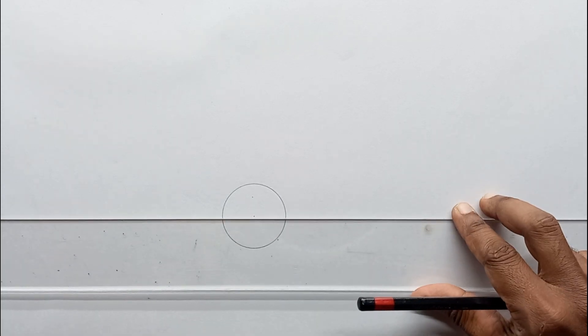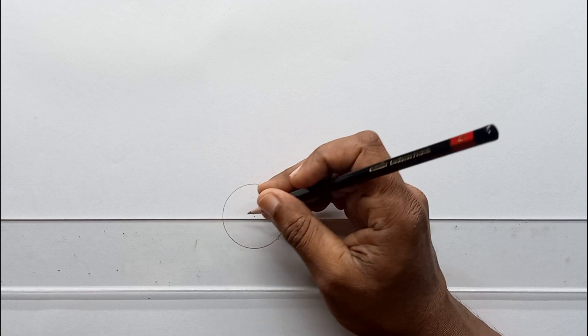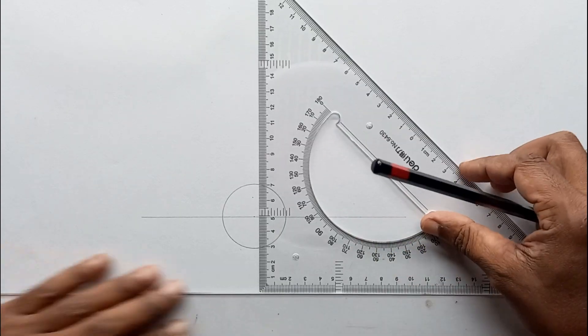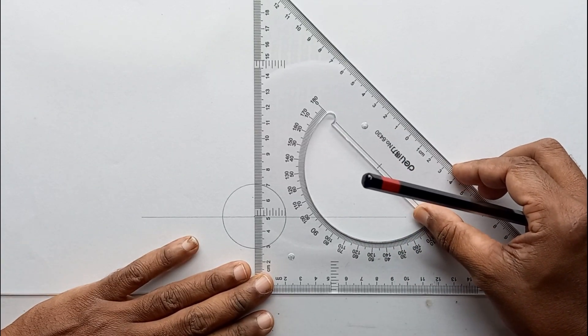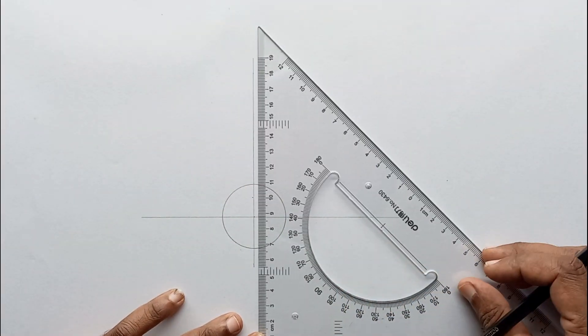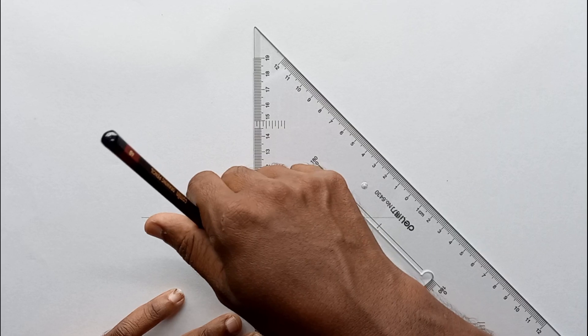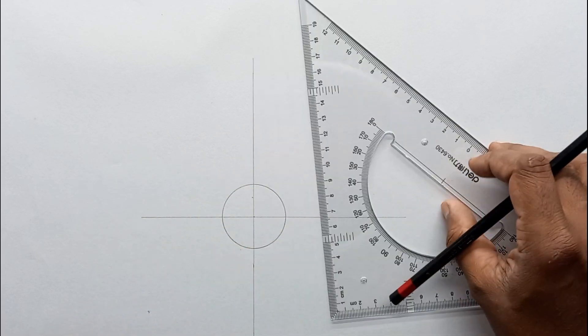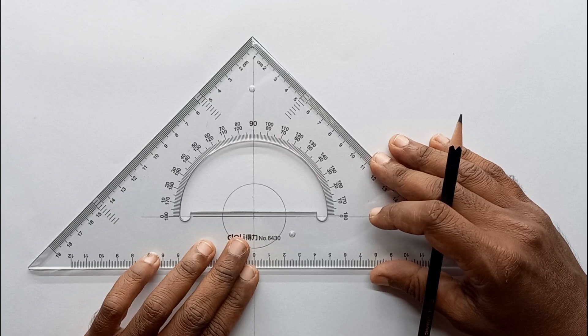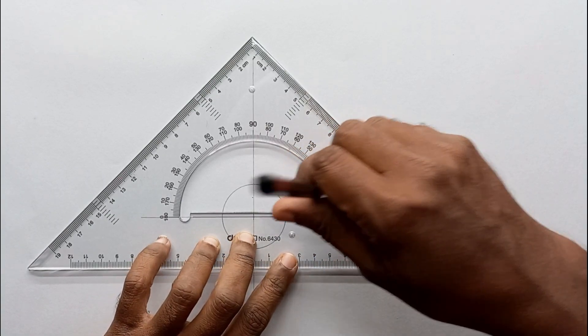Then this circle I am going to divide into 12 equal segments. I am going to use the protractor to divide the circle into 12 equal segments.